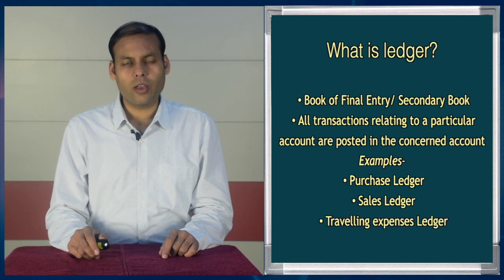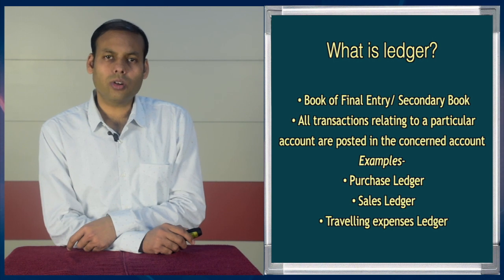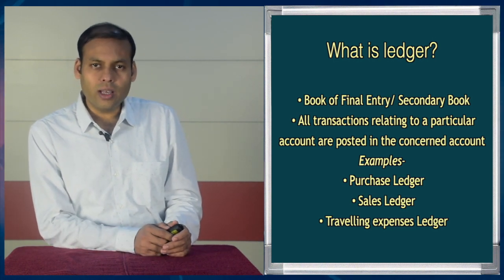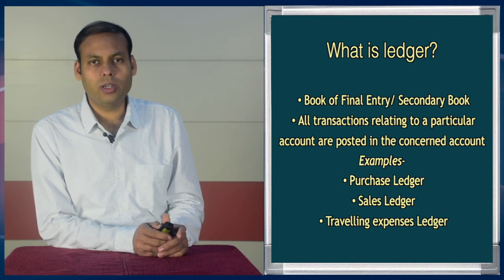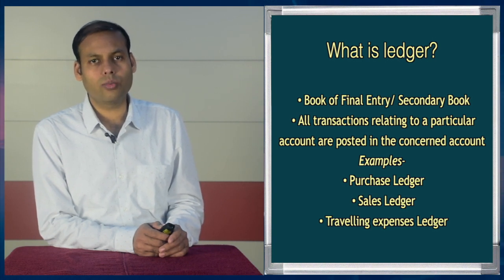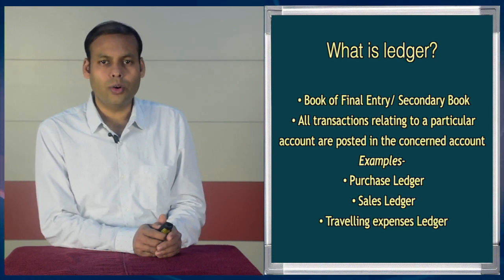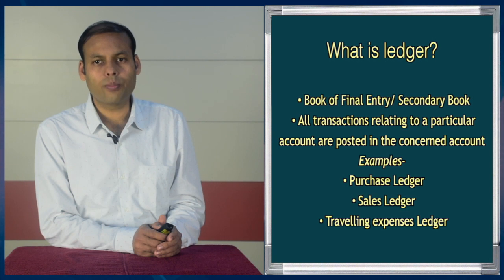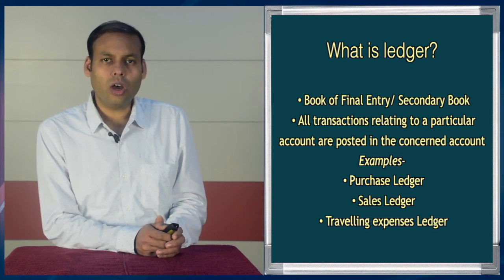Let us first have a discussion on the concept of the ledger. Ledger is known as the book of final entry. It is also known as a secondary book. Journal is known as the primary book. In the journal, we record transactions on the basis of date. In case of the ledger, all transactions relating to a particular account are posted in the concerned account in the ledger book.